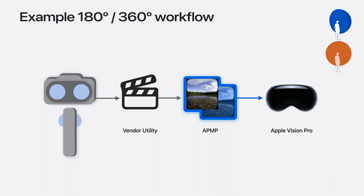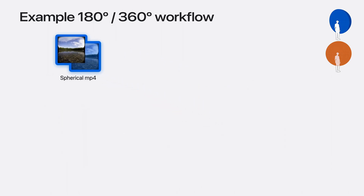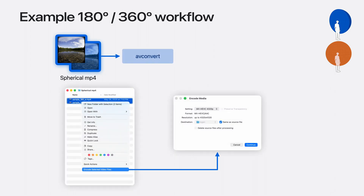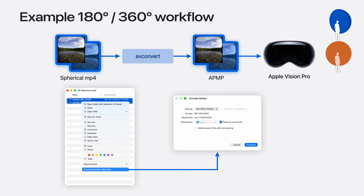Otherwise, if your camera software does not yet support Apple Projected Media, you can export as 180 or 360 using spherical metadata. Then use the AVConvert macOS utility, either from the command line or through a Finder action by control-clicking a selection of one or more video files. Finally, AirDrop or use iCloud to transfer files to Apple Vision Pro. Apple Projected Media Profile is suitable for signaling projected video through full media workflows, including capture, editing, and delivery.